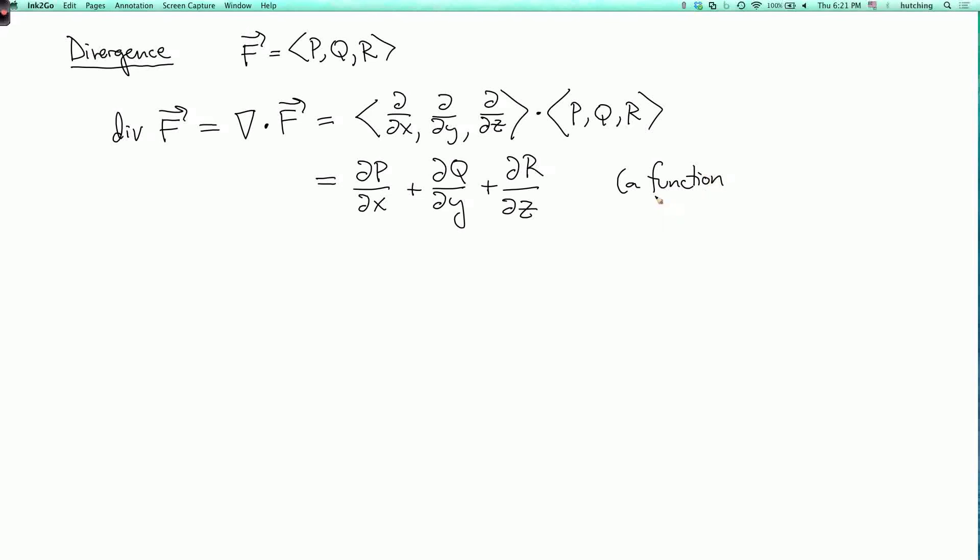So the curl of a vector field is a vector field. The divergence of a vector field is a function. And this definition makes sense in any number of dimensions. The curl is special to three dimensions because it uses the cross product. The divergence uses the dot product which works in any number of dimensions.